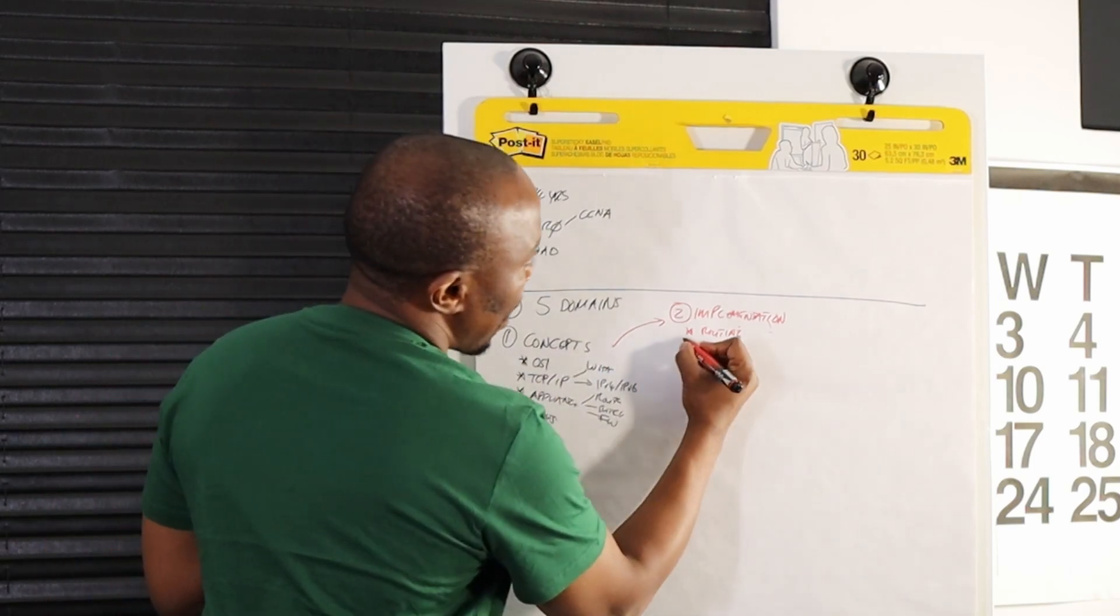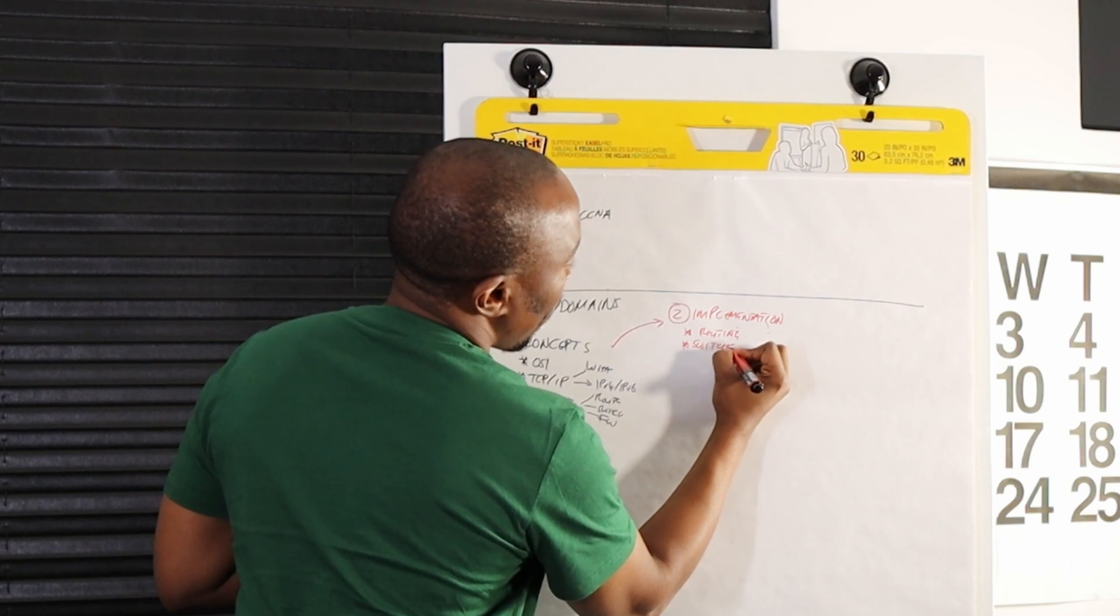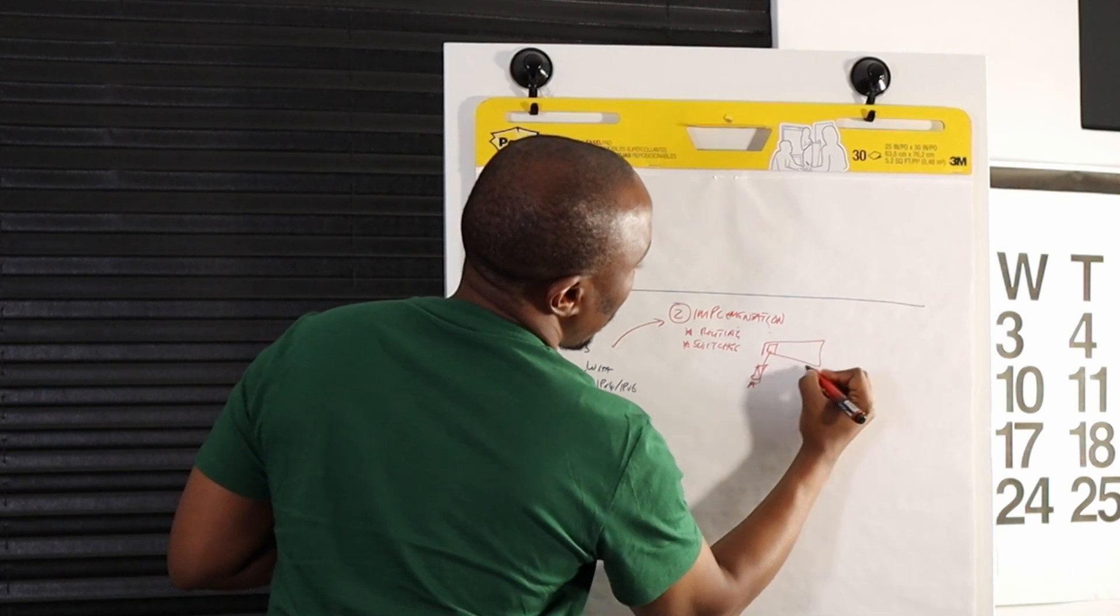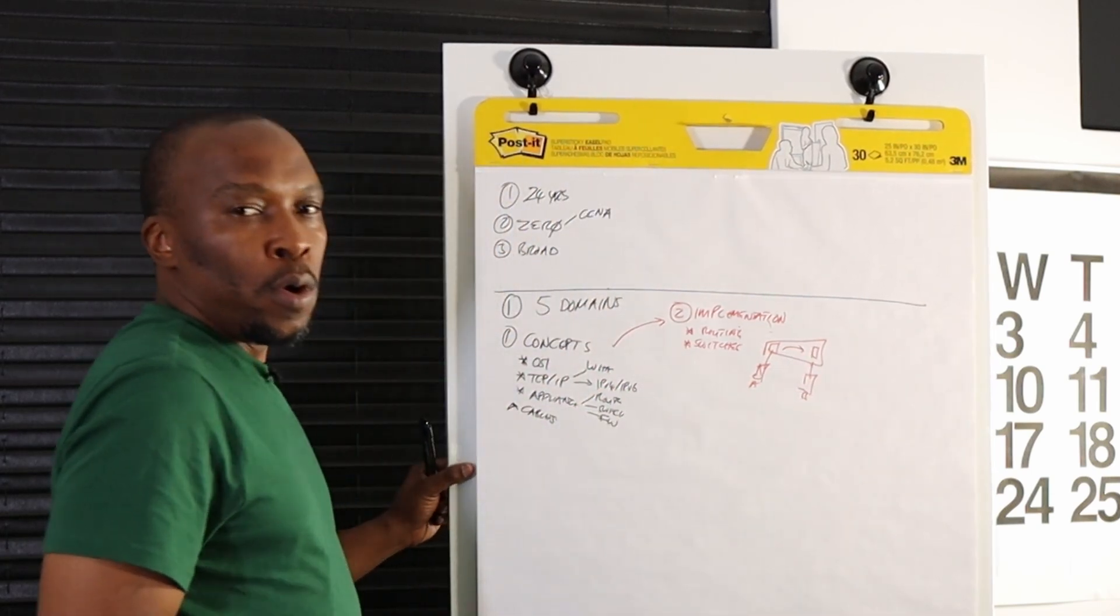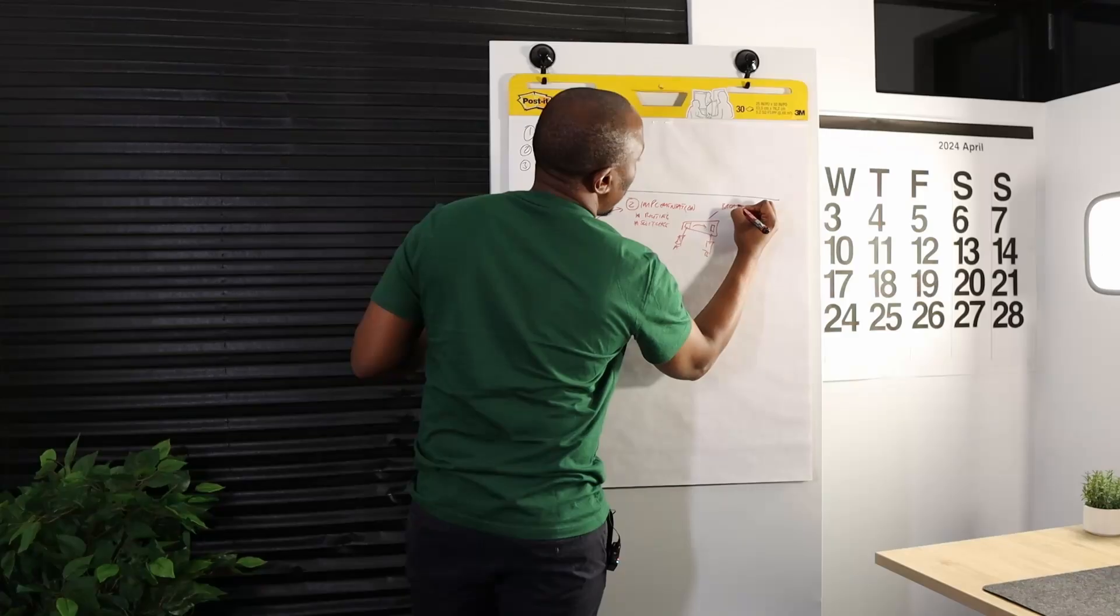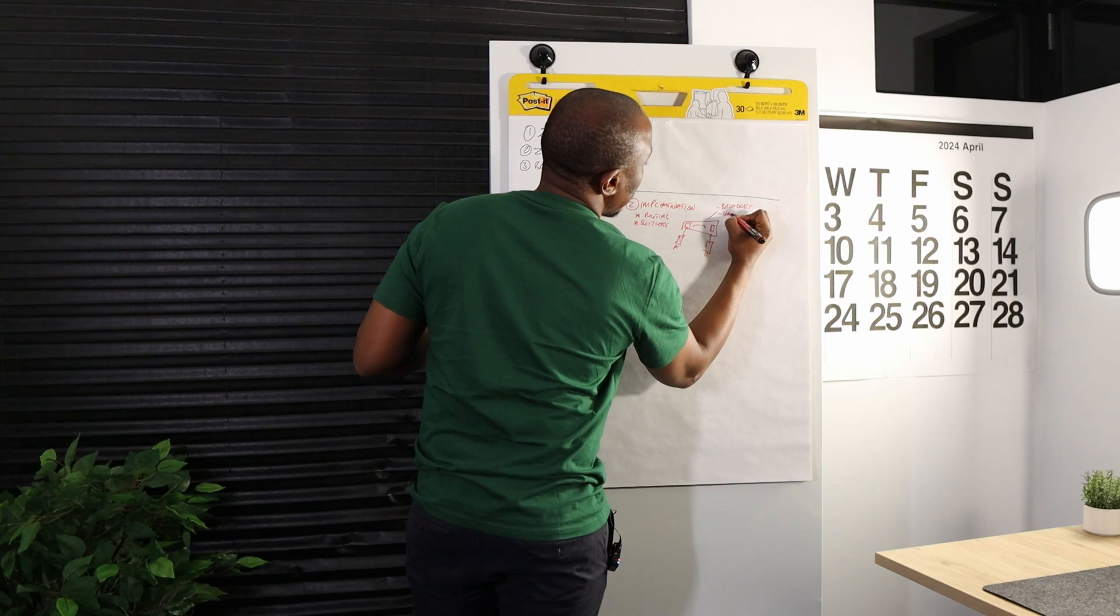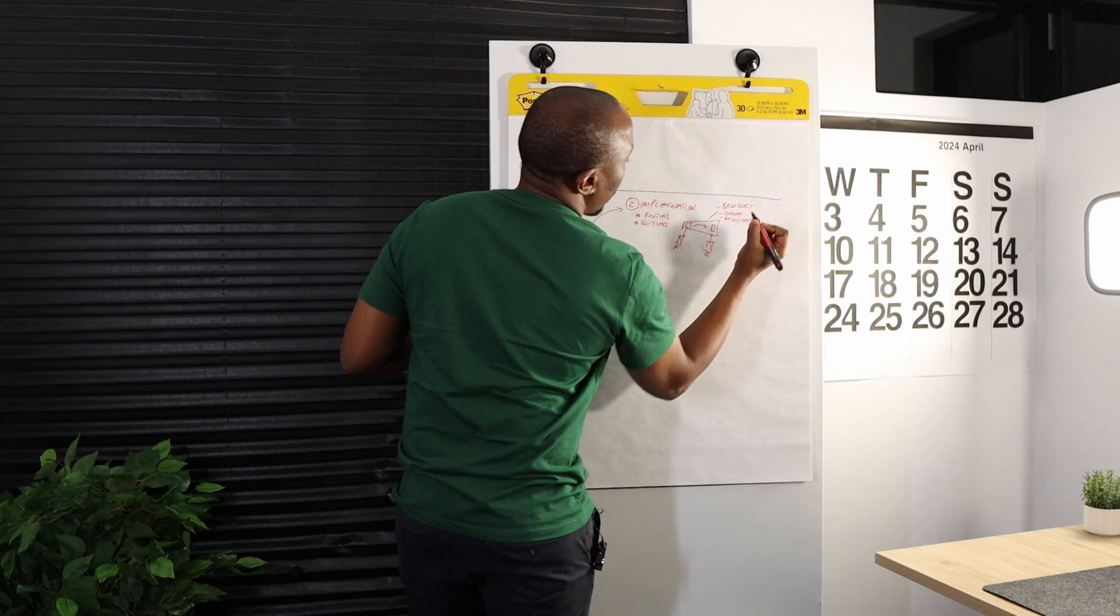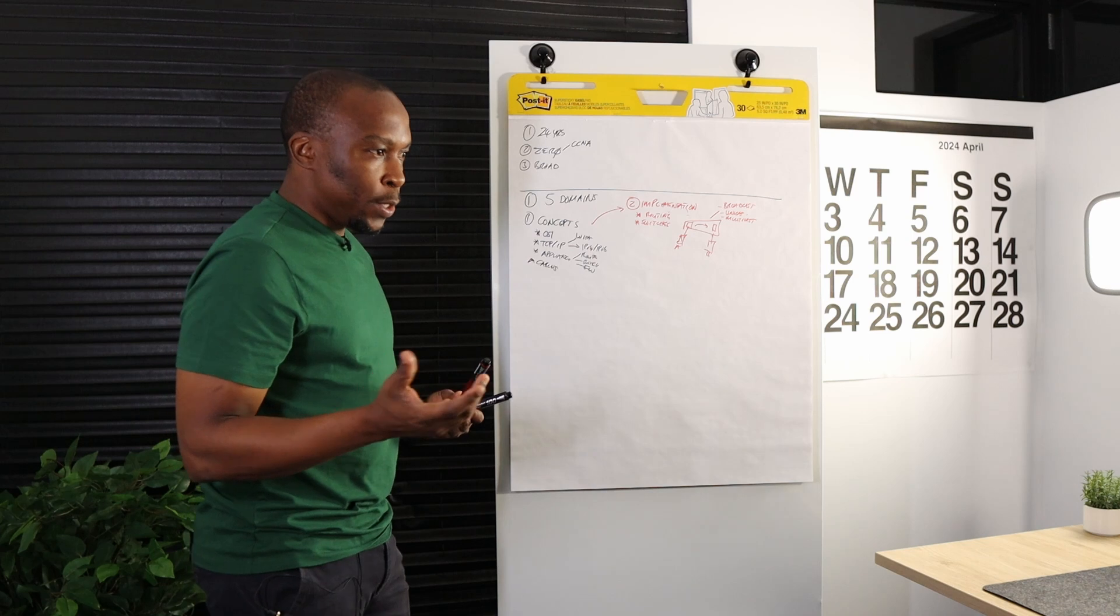You'll learn about switching and how switches operate. A user that's connected here and a machine that's connected here, how do the two talk to each other? You're going to learn terms such as broadcast, unicast, multicast. How do these terms control the flow of traffic on your network?